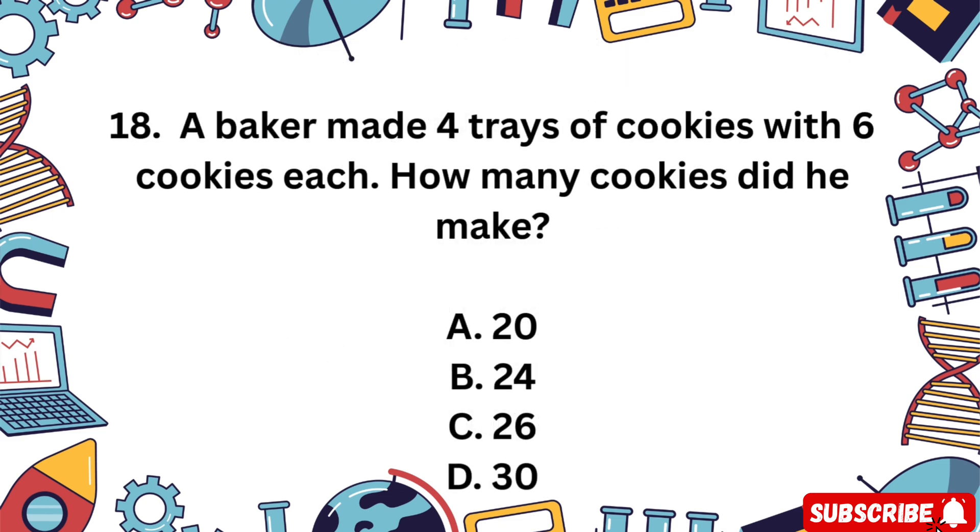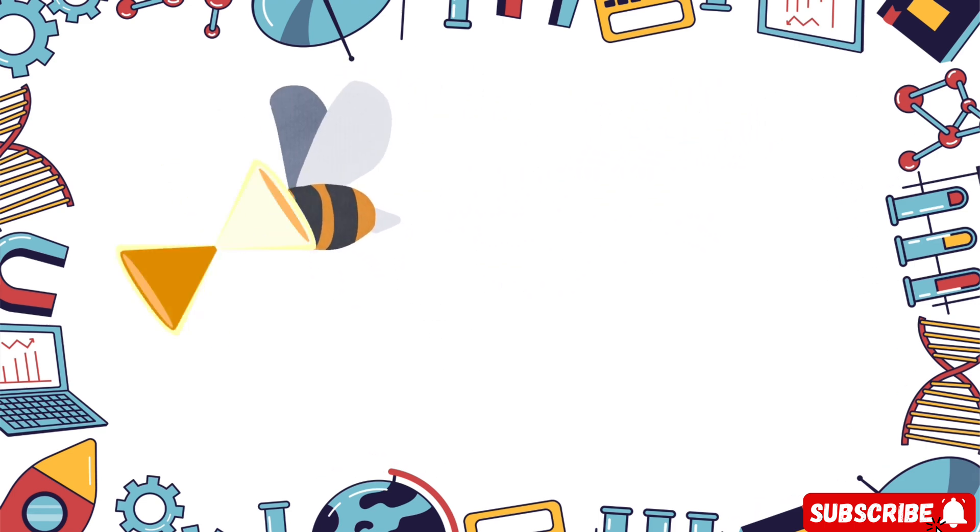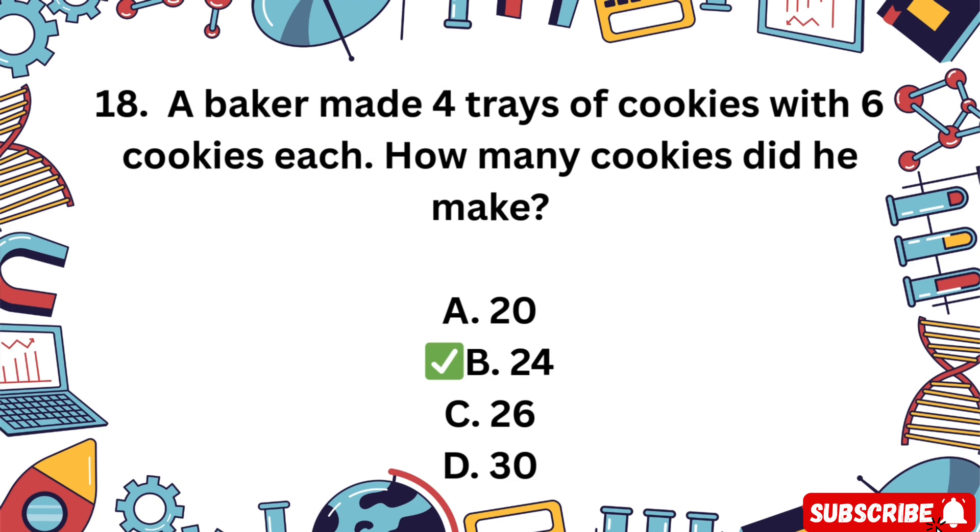Question 18. A baker made 4 trays of cookies with 6 cookies on each tray. How many cookies did he make? A 20, B 24, C 26, D 30. Multiply trays by cookies. You have 5 seconds. The correct answer is B 24. 4 times 6 equals 24.